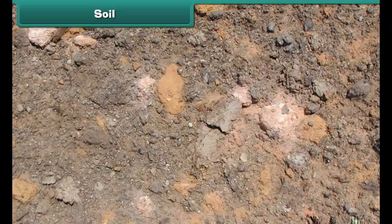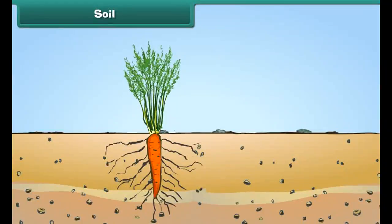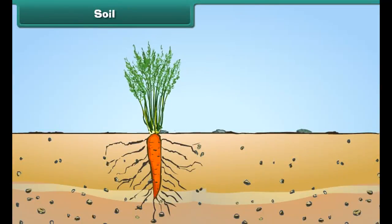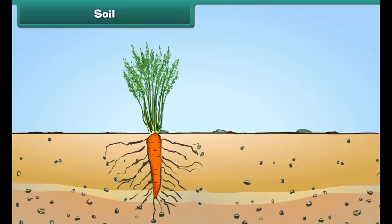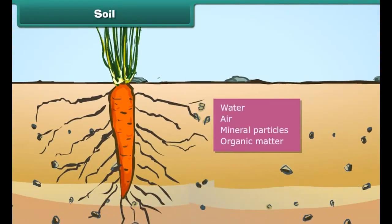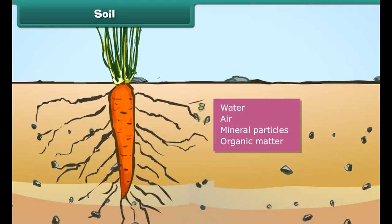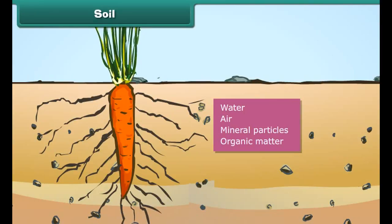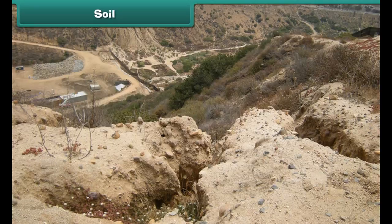It serves as a natural medium for growth of plants. Most soils contain four basic components: water, air, mineral particles, and organic matter. But the fertility of soil has decreased significantly, mainly because of soil erosion.